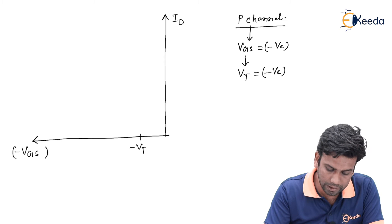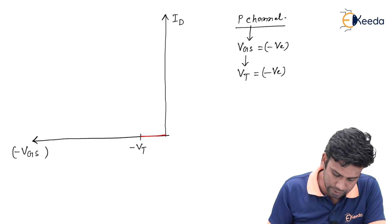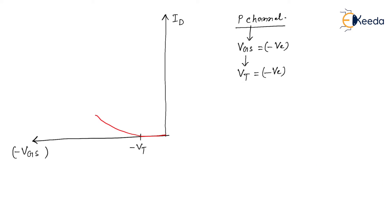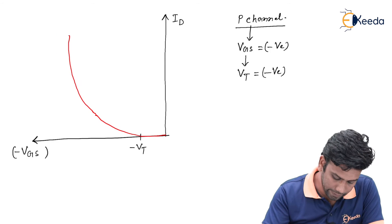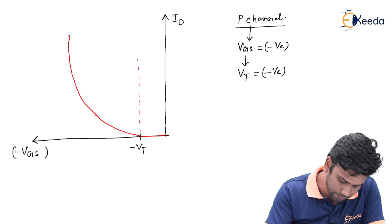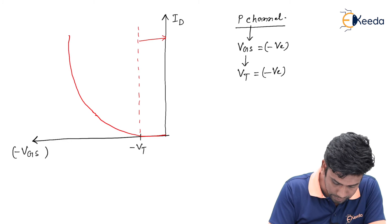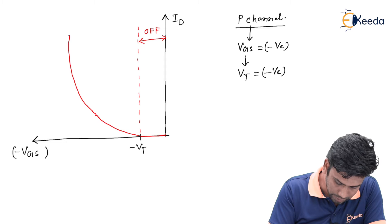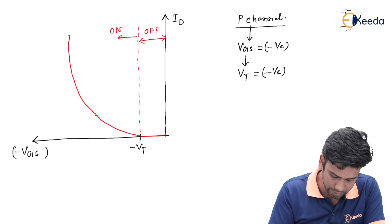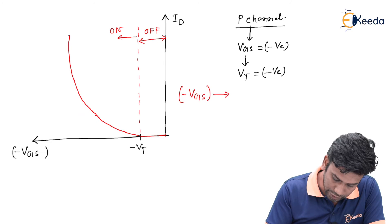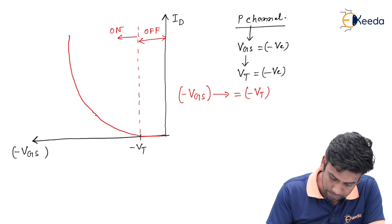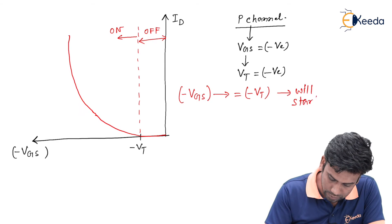Before the Vt value the Id current will be zero because the MOSFET is off, and after the Vt value the transfer characteristics will look like this. We can divide the total graph into two parts: in one part it is the off state and in the other part it is the on state of the MOSFET. When the magnitude of Vgs equals minus Vt, the MOSFET will start its on state.